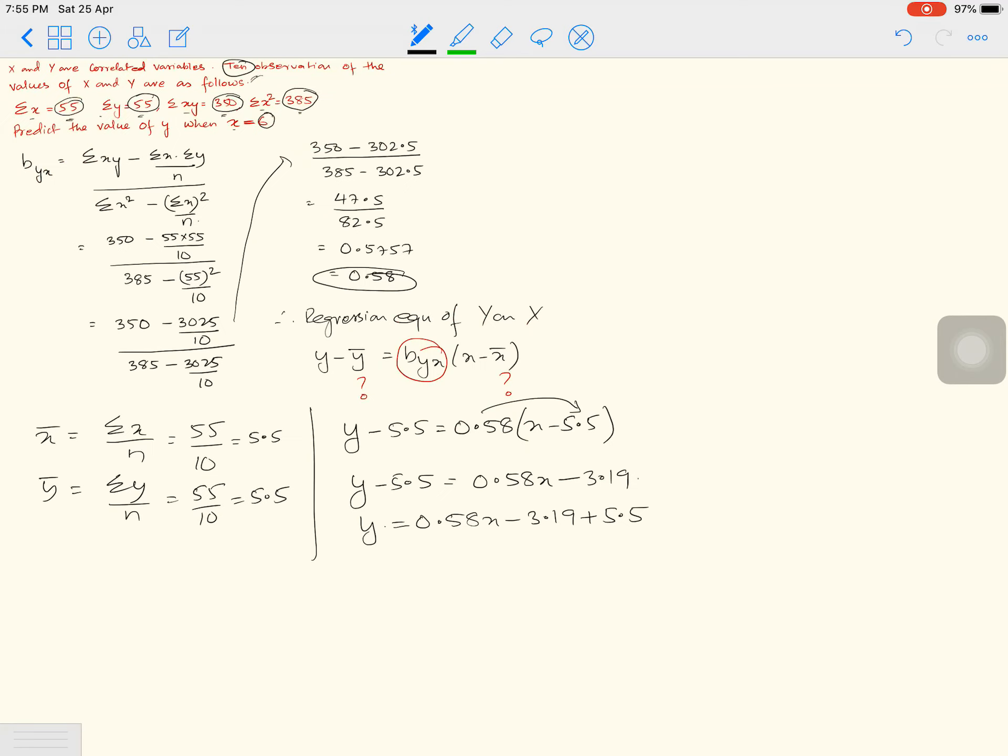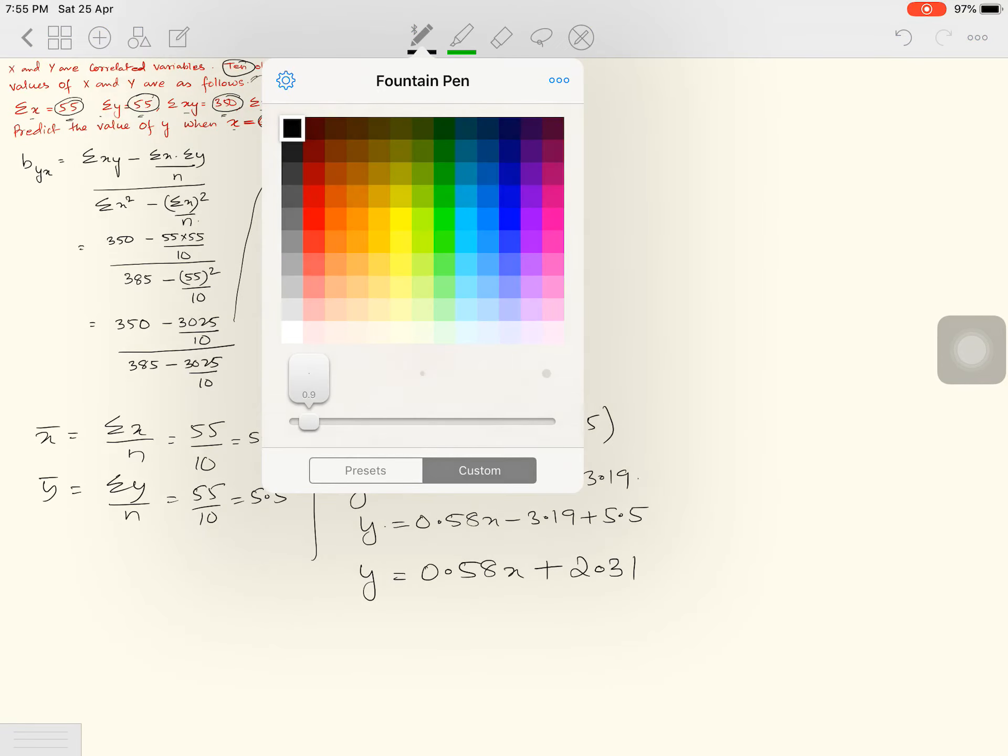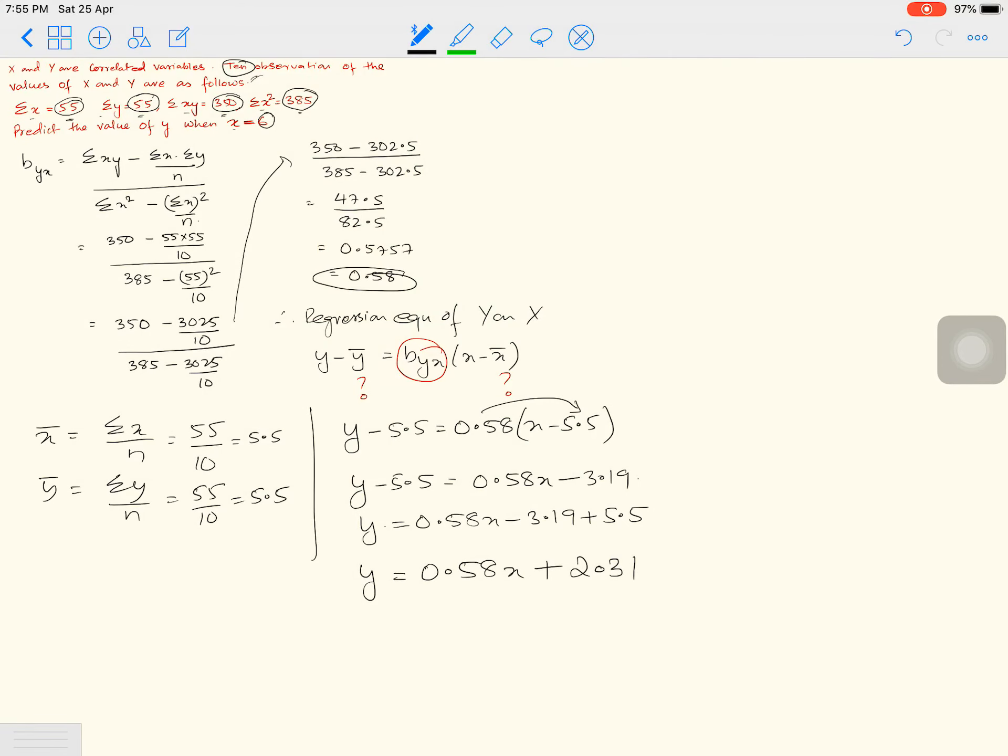Y equals 0.58X minus 3.19 plus 5.5. So finally, what do I have? Y equals 0.58X plus, if you do this you'll get 2.31. So this is the regression equation of Y on X. Now time to predict.